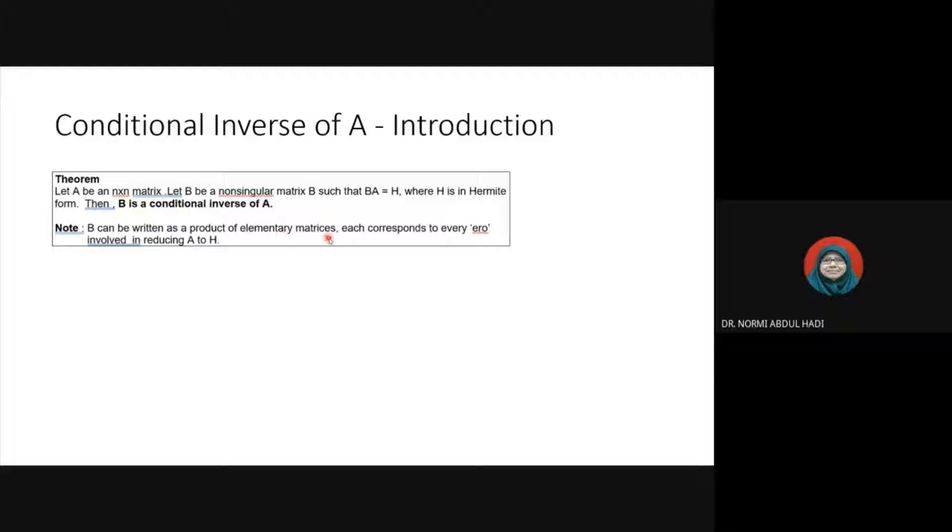B can be written as a product of elementary matrices, each corresponding to every row operation involved in reducing A to H.